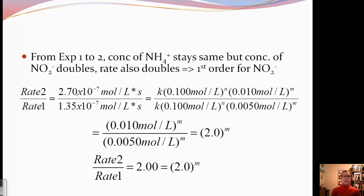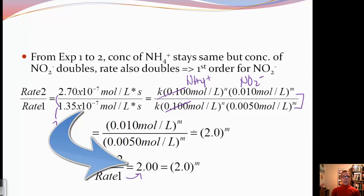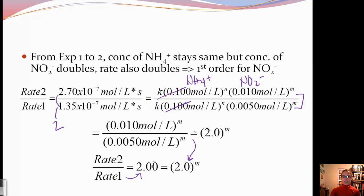Here's the math that's going on: we're taking rate 2 divided by rate 1. Here's our rate law — here's our concentration of NH4 plus, here's our concentration of NO2 minus. These cancel off because they're the same in the numerator and denominator. So we only have the NO2 minus terms left. Taking rate 2 divided by rate 1 gives us 2, and dividing those concentrations also gives us 2 to the M. So 2 equals 2 to the M, which means M equals 1.